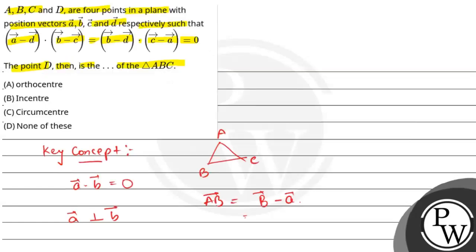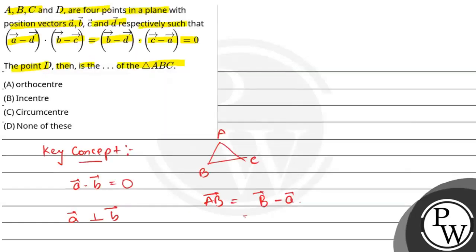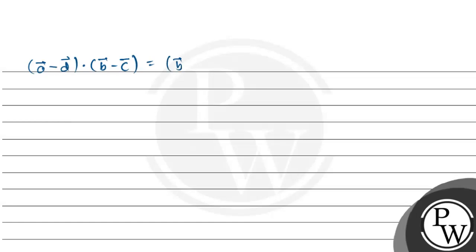Now we will solve this question. (a - d) · (b - c) equals (b - d) · (c - a) equals 0.